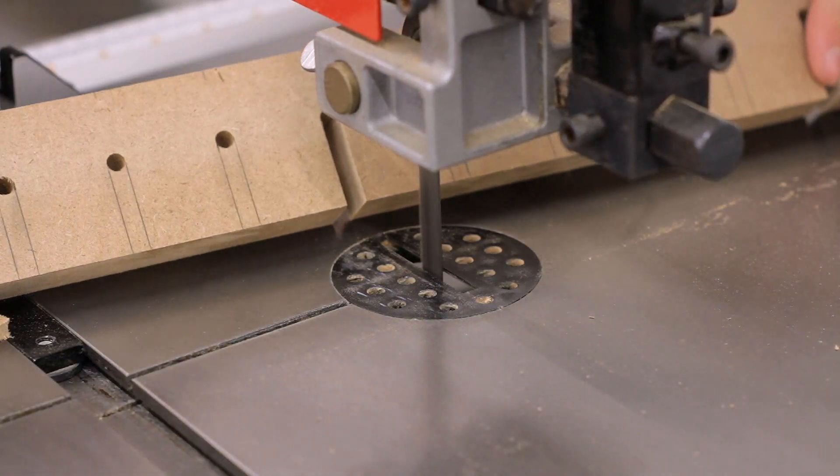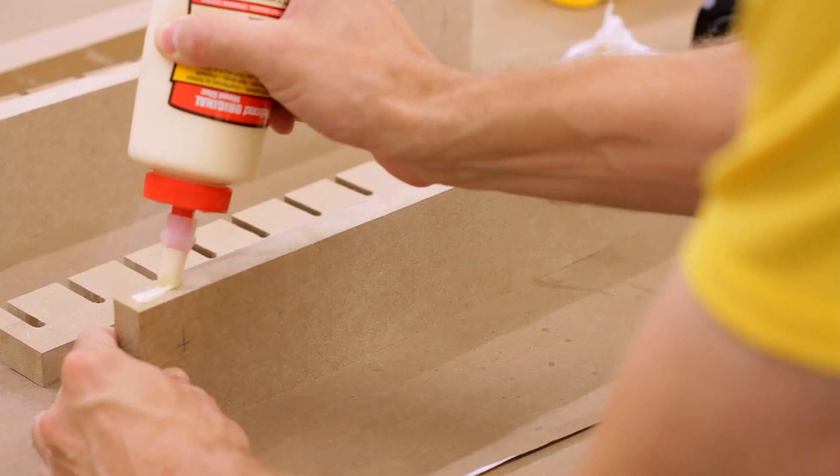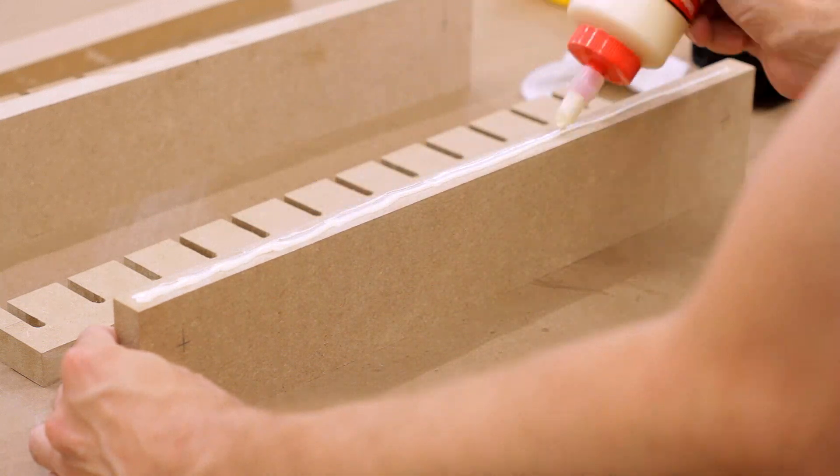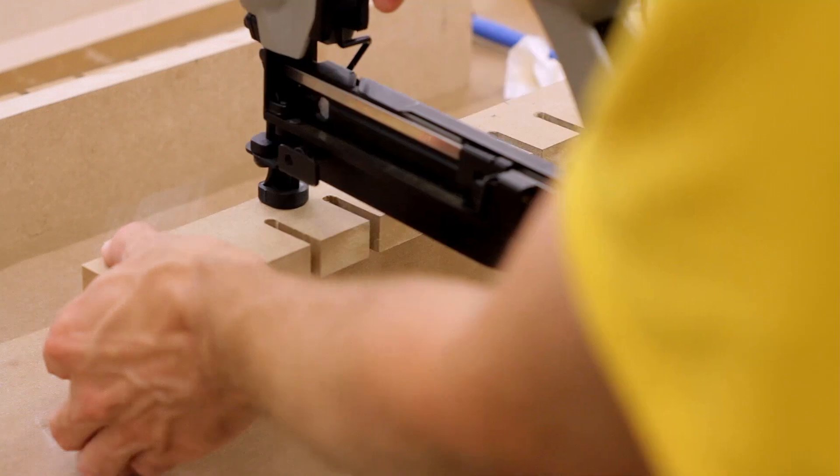Once that was finished I cleaned up the bottoms of the slots with a file and some sandpaper. Assembly was pretty simple. I ran a bead of glue along the top of the back piece and used several two-inch nails and my nail gun to attach the top to the back.